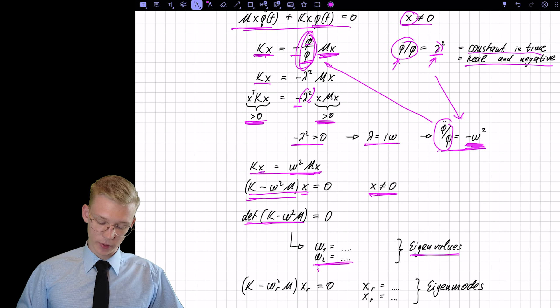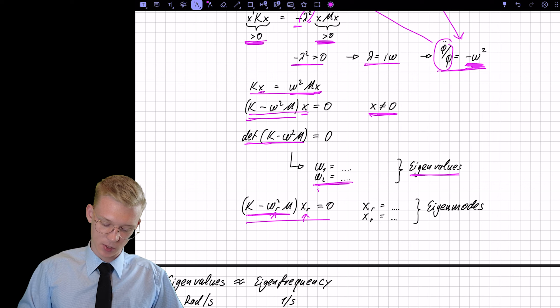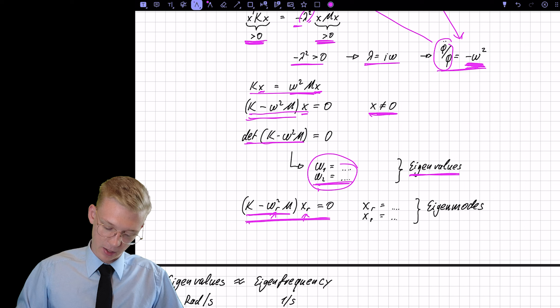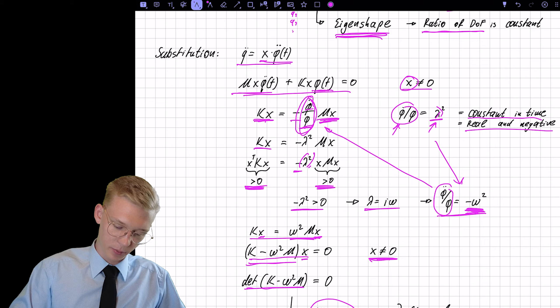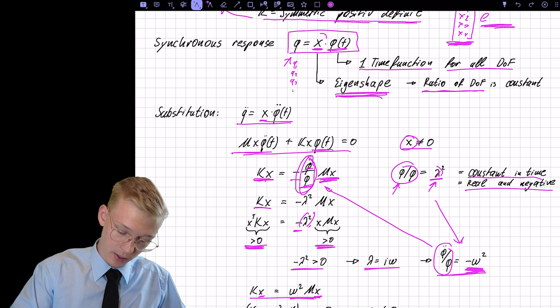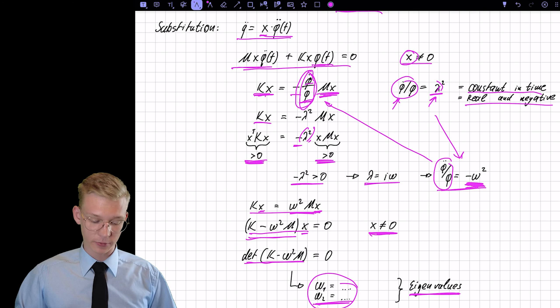So we need to set the omegas in such a way that the determinant will be 0. So we get omega 1 and omega 2 and so forth. And these are our eigenvalues. If we now found the eigenvalues, we can insert them back. So now we have omega r in this equation, and we can find a r x, xr, that will fulfill this equation. So we have now found eigenvalues, and now we can find those eigenmodes. We just found this vector by doing just simple algebraic operations.